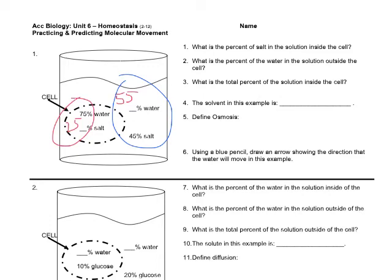So the percent solution inside the cell of salt is 25%. What's the percent of water in the solution outside the cell? We said that that's 55%. What's the total percent of solution inside of the cell? The total percent, of course, is 100. 75 plus 25 is equal to 100.